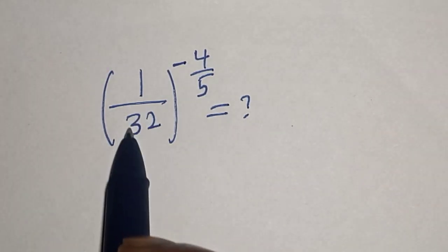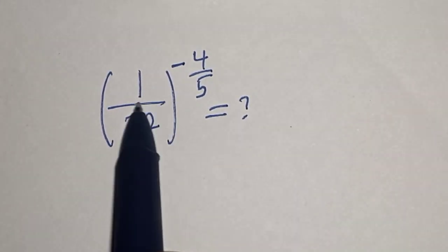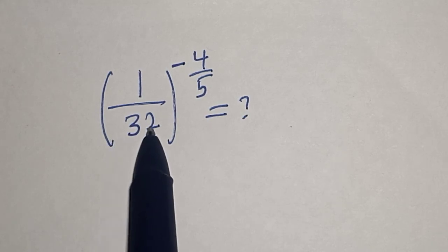Hello, welcome to Math This. In this class we want to simplify this math problem: 1 divided by 32, raised to the power of minus 4 over 5.